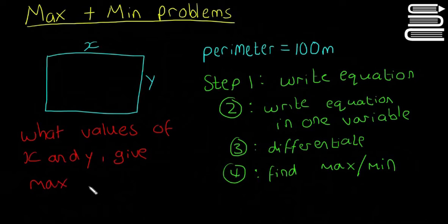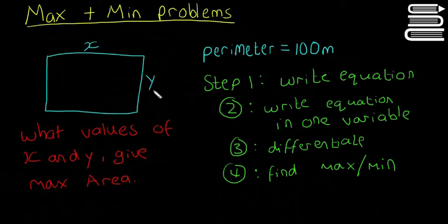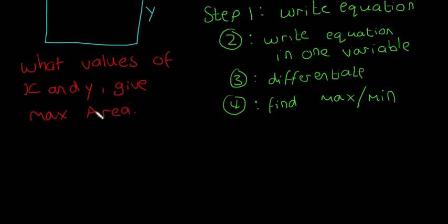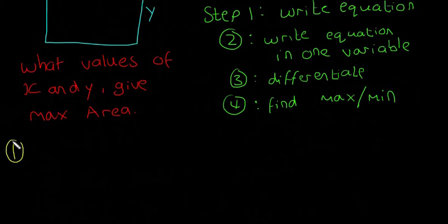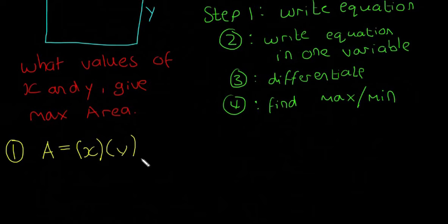The question asks: what values of x and y give the maximum possible area? The values of x and y determine the shape of the field. Following step one, we write our equation: A is equal to x times y. But this isn't much use because it's in two variables — x and y — so we need to go on to step two.